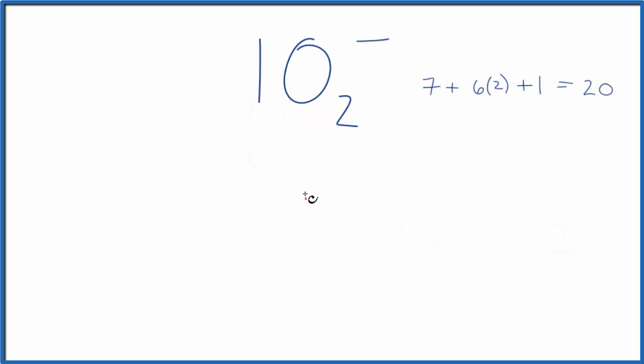We'll put iodine in the center of our Lewis structure. It's the least electronegative element here, and then an oxygen on either side.